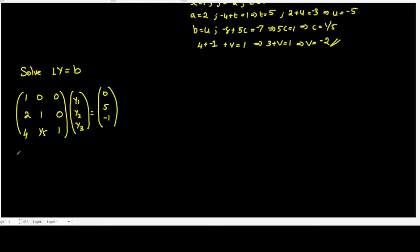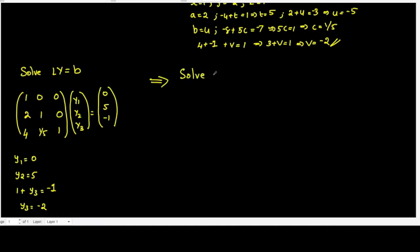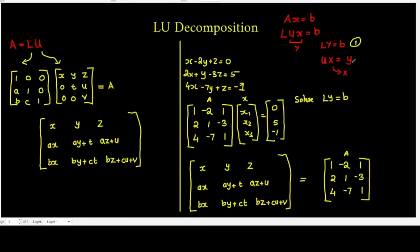Solving from the top: y1 equal to 0, y2 equal to 5, and then 1 plus y3 equal to minus 1, that is y3 equal to minus 2. So we got the values y1, y2, and y3. The next step is to solve for Ux equal to y — that is the second step, and that will fetch you the values of x.